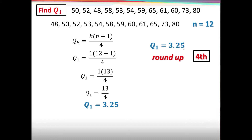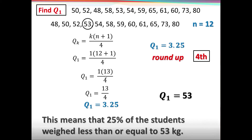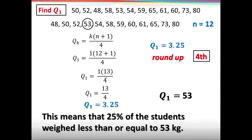The 4th value in our sorted list is 53. Therefore, Q sub 1 = 53. This means that 25% of the students weighed less than or equal to 53 kilograms.